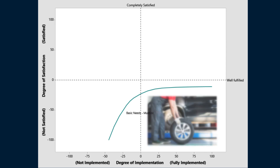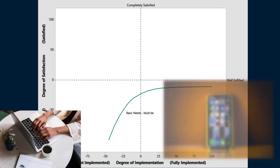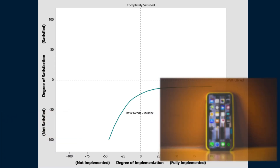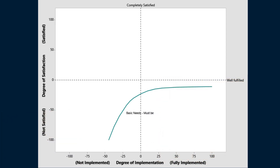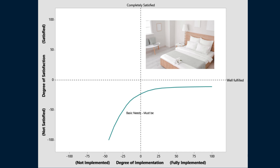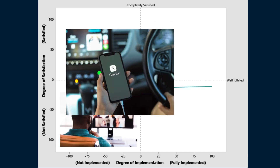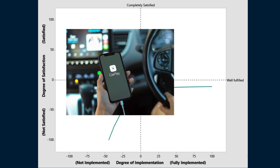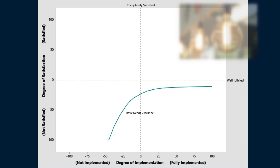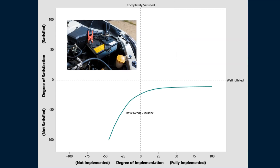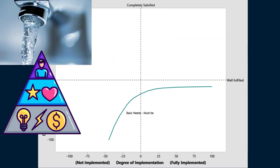Basic needs include car tires, laptops, coffee, an iPhone, that backup camera on your car, a hotel bed, virtual calls, CarPlay — and yes, CarPlay is becoming basic. Electricity, a battery in your car, some of Maslow's hierarchy of needs, running water and plumbing. These are all basic needs and must-be's that should be unspoken.